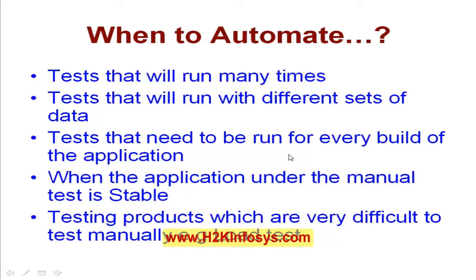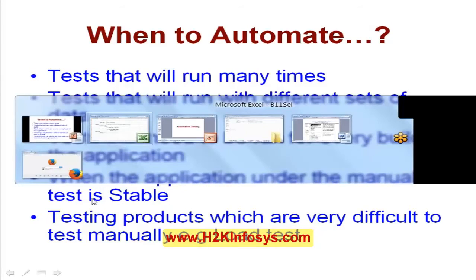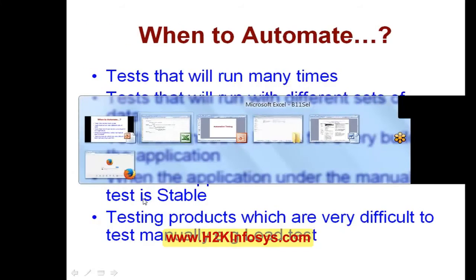If you want to make sure existing functionality did not get disturbed, write a set of automation scripts. Going forward for any new build or release, simply make use of the automation scripts to ensure the application is working properly. When the application under manual testing is stable — this is a prerequisite and one of the important points for automation testing. We will not generally go for automation testing if the application is not stable.